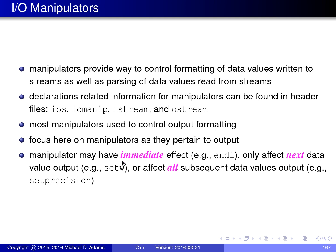There are a few categories of manipulators based on how they behave when applied to streams. Some manipulators have an immediate effect — for example, endl, which causes a newline character to be written and the output stream to be flushed. Some manipulators only affect the next data value output, such as setw, which sets the field width. And some manipulators are sticky — once applied, they remain in effect until changed. An example is setprecision, which controls how many decimal places are printed.